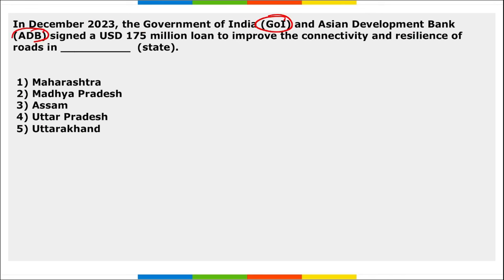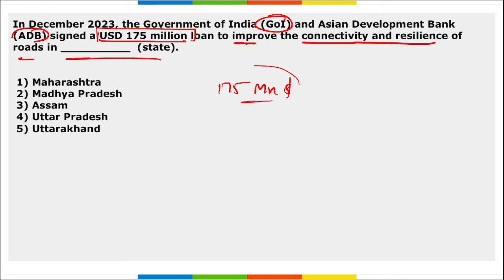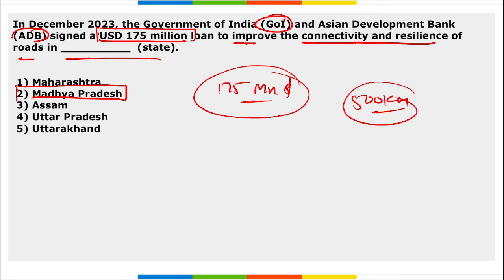Next: the Government of India and the Asian Development Bank recently signed a 175 million dollar loan to improve connectivity and resilience of roads in Madhya Pradesh. Almost 500 kilometers of roads will be upgraded under this project, and it also involves developing green infrastructure — specifically electric vehicle charging infrastructure on those roads.